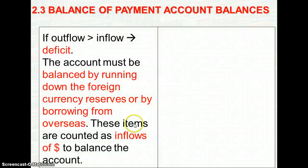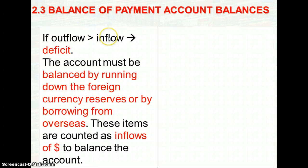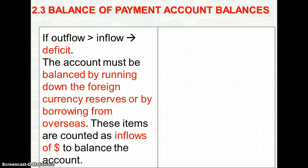Let me explain this further by looking at an example. If there is a balance of payment deficit, it means that the outflow of our home currency out of our economy is actually more than the inflow of foreign currency into our economy. This will be a downward pressure on our exchange rate, because there is an increase in demand for foreign currency while at the same time the supply of the home currency out of our economy actually increases.